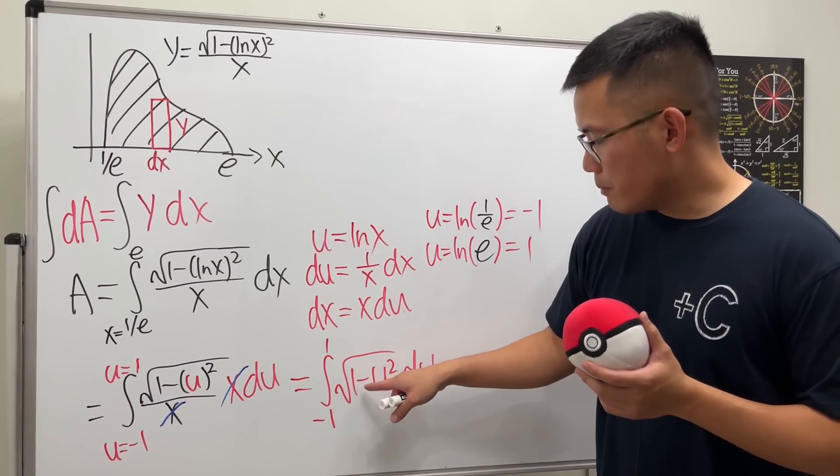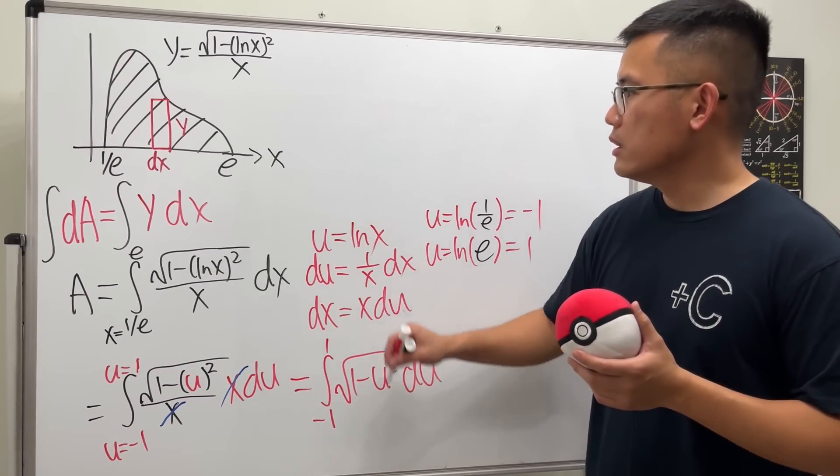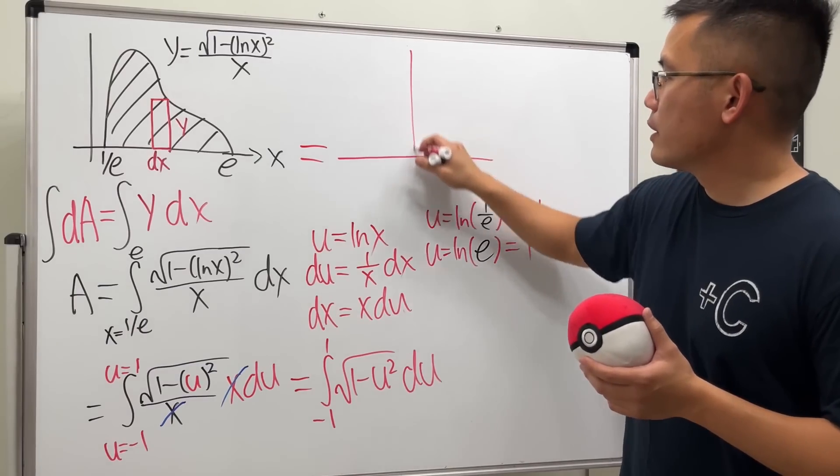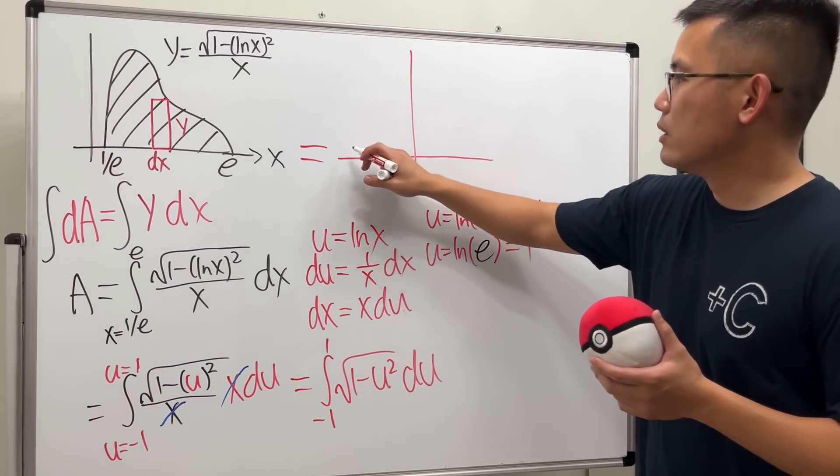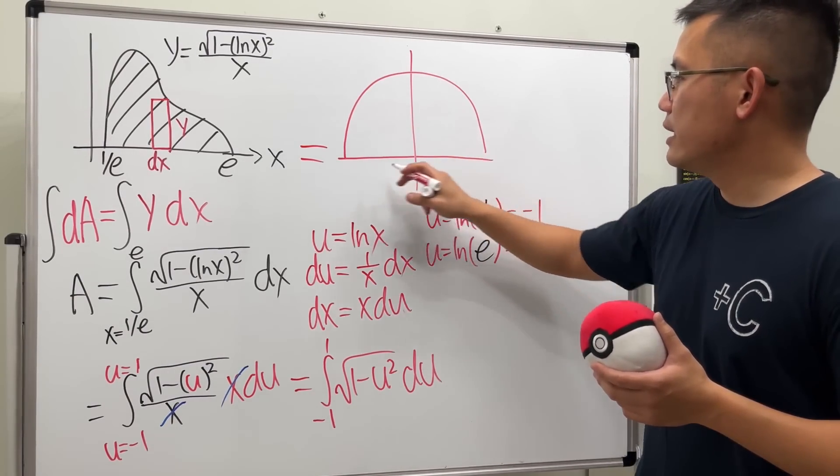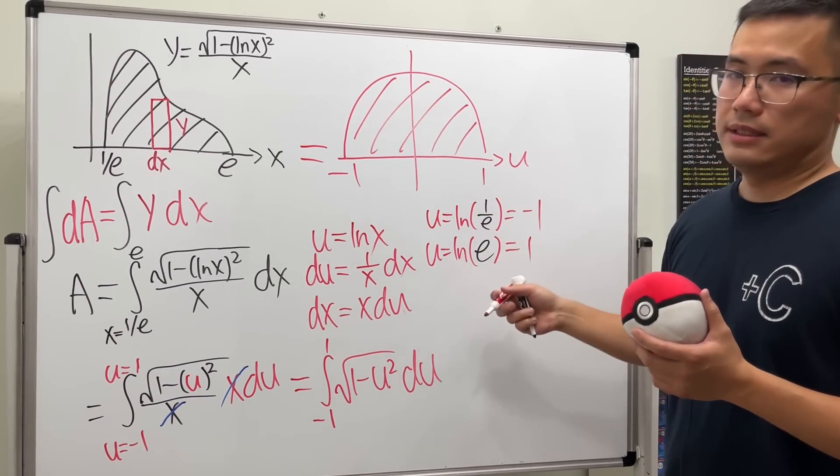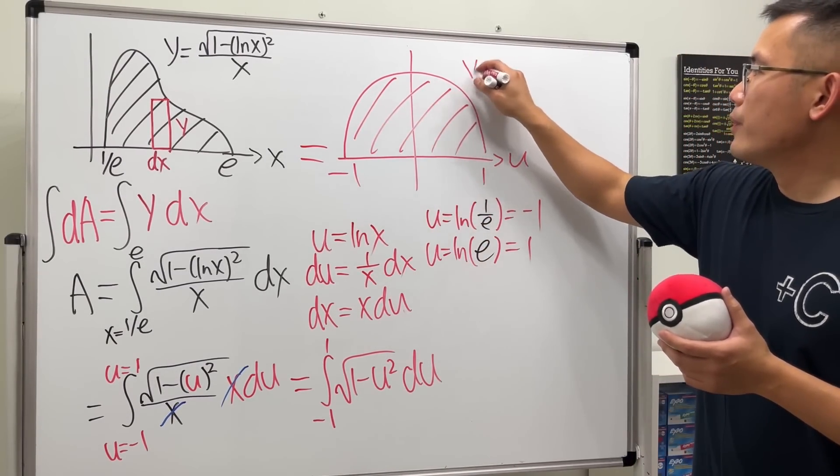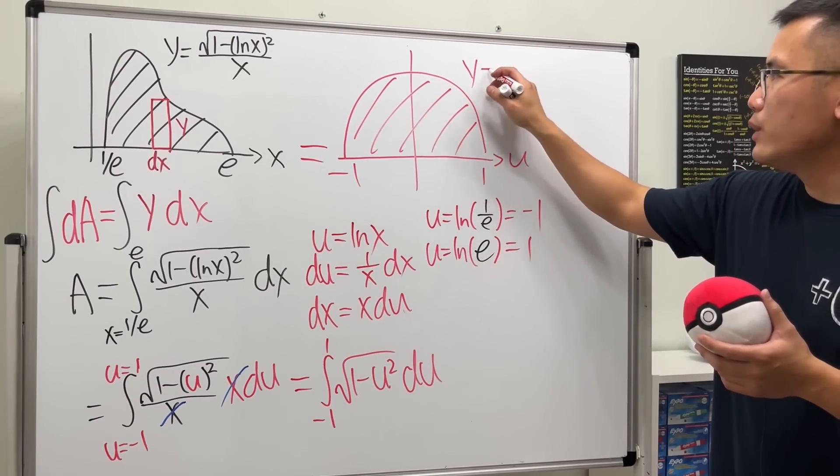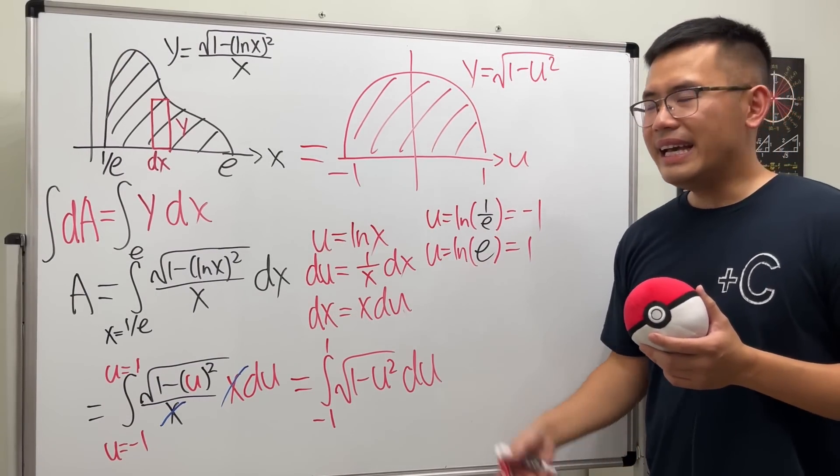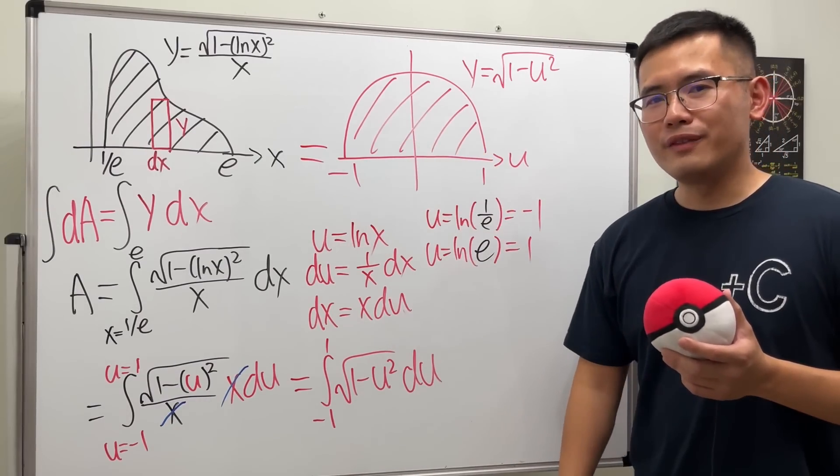Let's try to graph this right now. 1 minus u² in the square root looks like this, and it's just going to give us a semicircle, just the top half like this. It goes from -1 to 1, and this right here is the u-axis. The equation is technically y equals square root of 1 minus u².